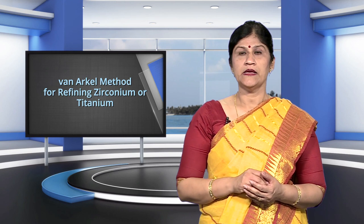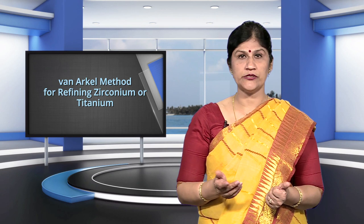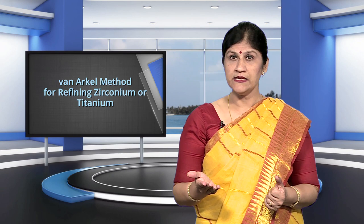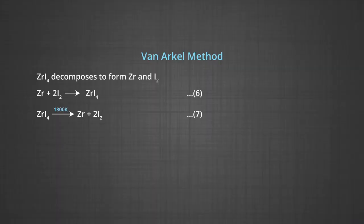The next method under this category is Van Arkel method. This method is used for obtaining ultra pure metals for refining zirconium or titanium. This method is very useful for removing all the oxygen and nitrogen present in the form of impurity in certain metals like zirconium and titanium. The crude metal is heated in an evacuated vessel with iodine. The metal iodide being more covalent, volatilizes.